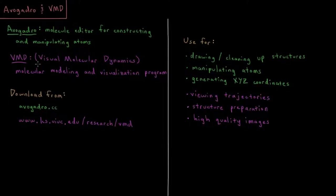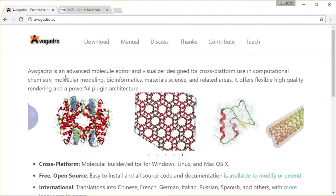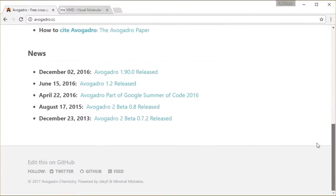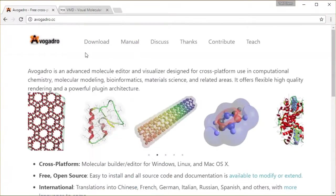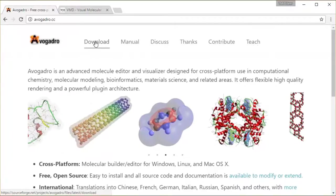Each of these programs is free and available for download and installation from their respective websites. We have Avogadro.cc, where we have the Avogadro website with whatever news and notes are recent, and you can download whatever version you like from their download page.